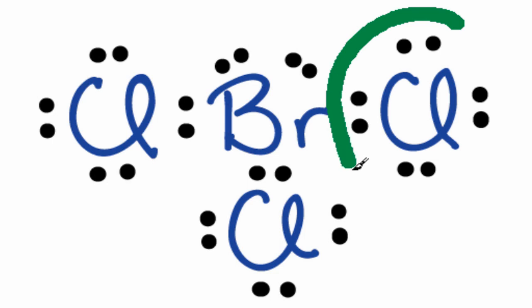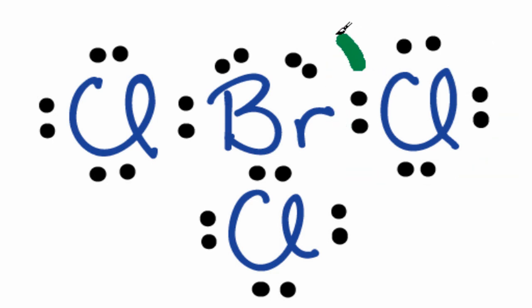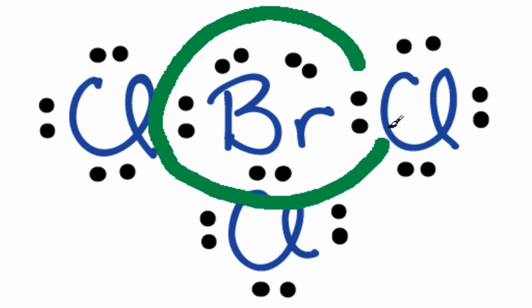So now, each of the Chlorines has 8 valence electrons, and then the Bromine in the center has more than 8, but that's okay again—it can have an expanded octet.